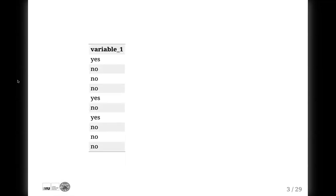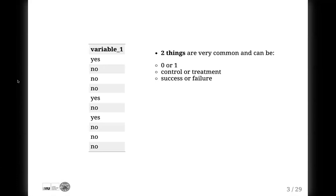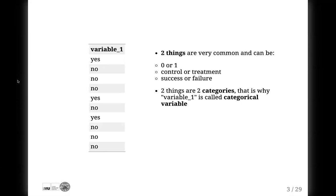Your column can have thousands of rows but we still have only two words in it — yes and no. These two things in the column are very common. It can be zero and one, control or treatment, failure or success. These two things are two categories of your variable. That is why variable one is called a categorical variable. It is also often called a binomial variable because there are only two things.